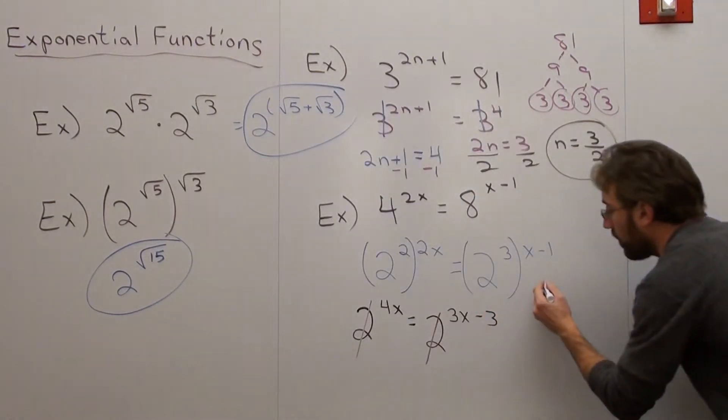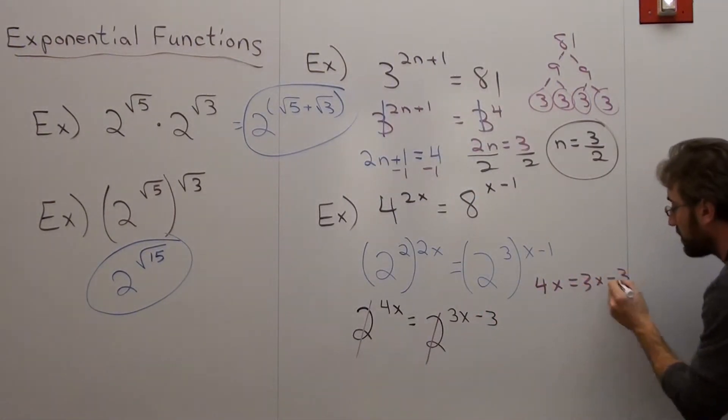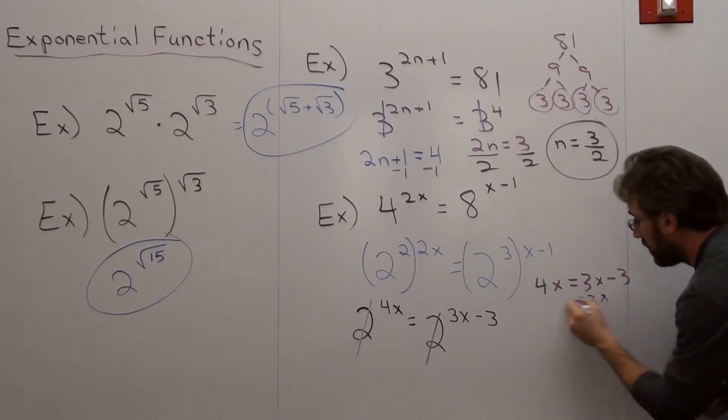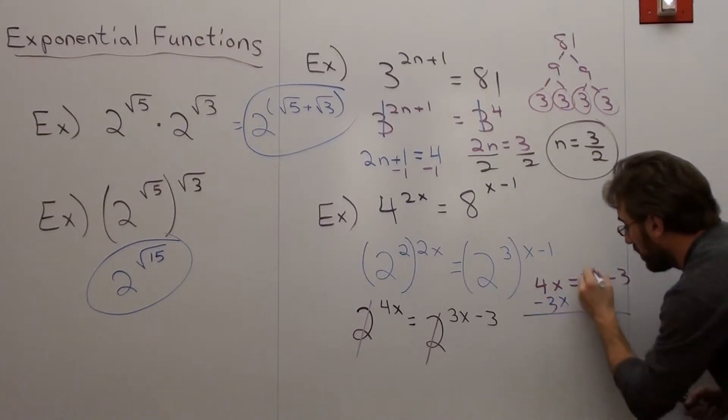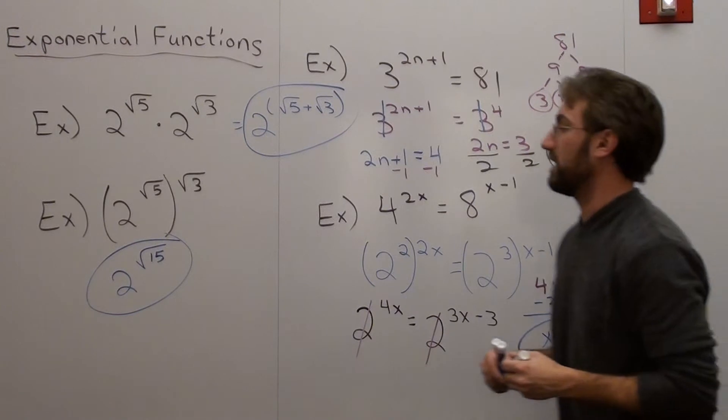And you get 4x equals 3x minus 3. Subtract 3x on both sides. x equals negative 3.